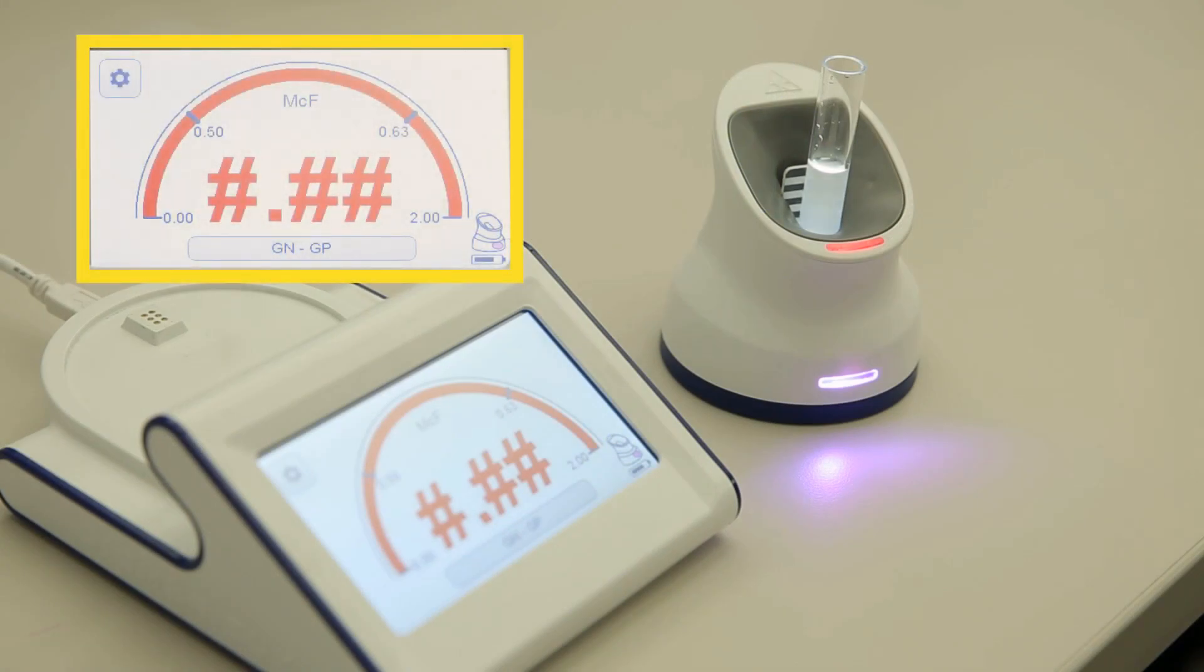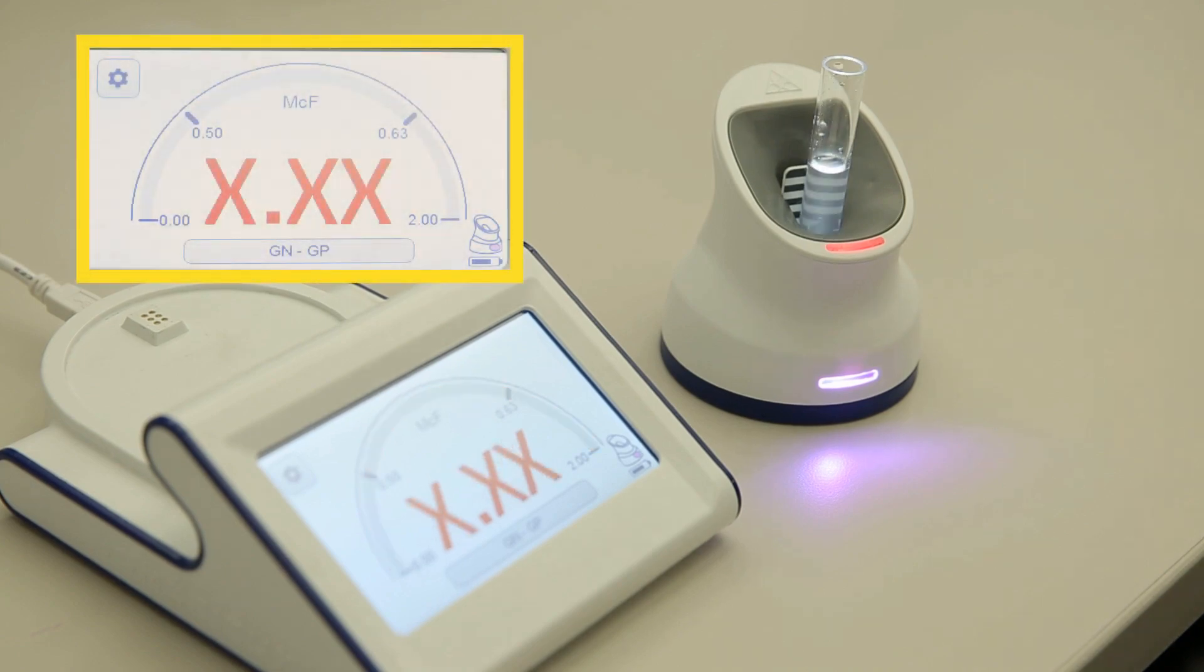If a sample is over-inoculated with a McFarlane value greater than 4.0, a swab is blocking the lens, or a clump of specimen is blocking the lens, pound symbols will be displayed in the McFarlane meter. If the device needs to be cleaned, re-zeroed, or a lens is dirty or damaged, X.XX will display.